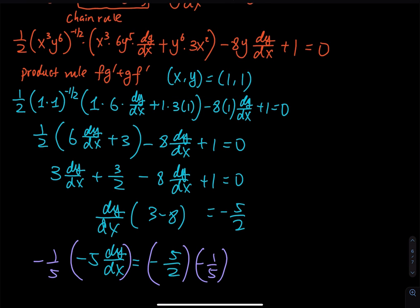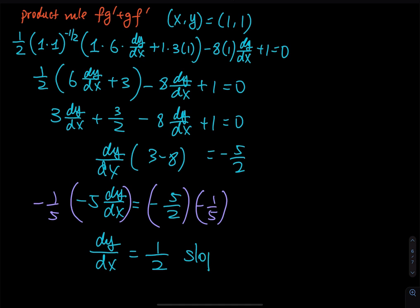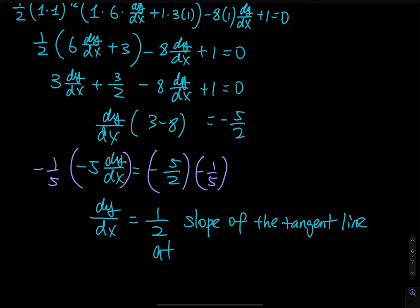The negatives cancel and the fives cancel, so dy/dx equals positive one-half. The slope of the tangent line at the given point (1, 1) is one-half.